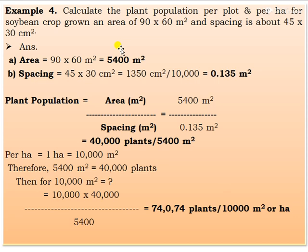For soybean: plot size 90 by 60 m, spacing 45 by 30 cm. Total area = 5,400 m², spacing = 0.135 m². Plant population = 5,400 ÷ 0.135 = 40,000 plants per 5,400 m². Per hectare: 10,000 × 40,000 ÷ 5,400 = 74,074 plants per hectare.